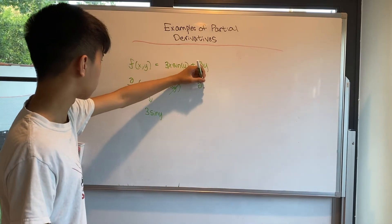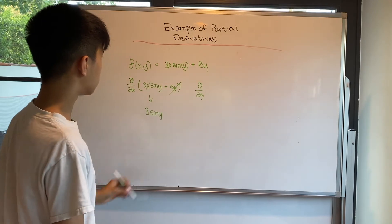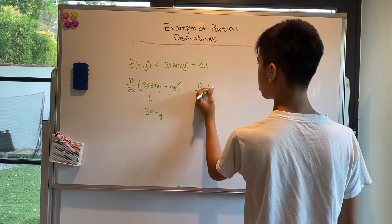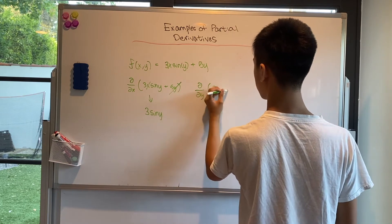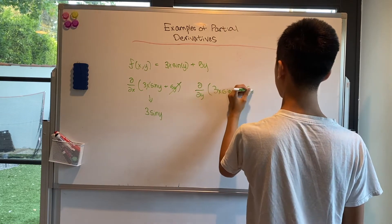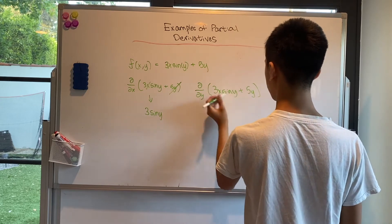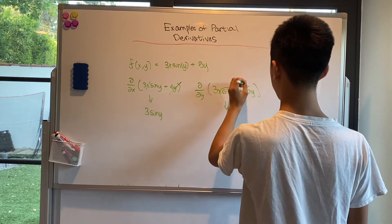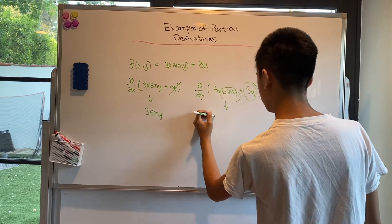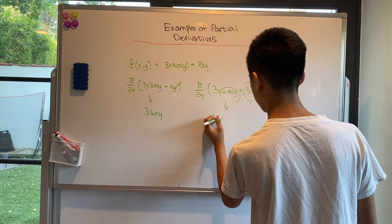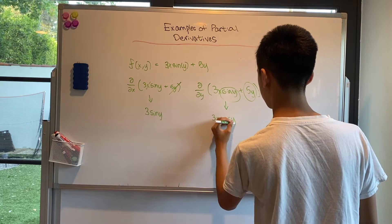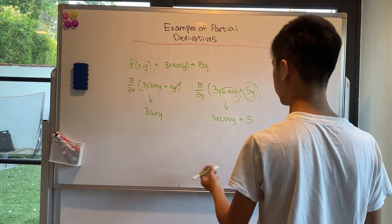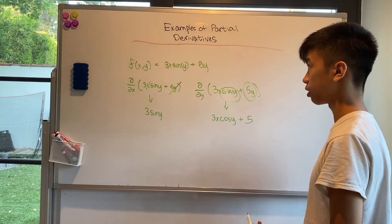What about the partial derivative of f with respect to y? This time x is a constant, so we differentiate sin(y) and 5y. The derivative of sin(y) is just cos(y), and the derivative of 5y is 5. So our partial derivative of f with respect to y is 3x·cos(y) + 5.